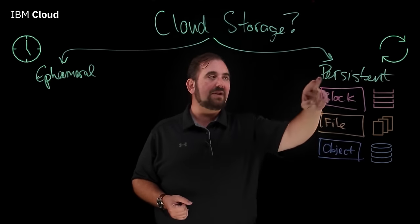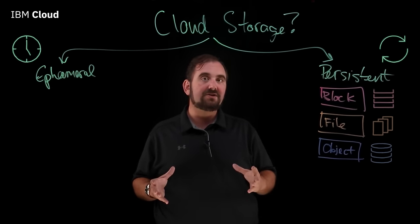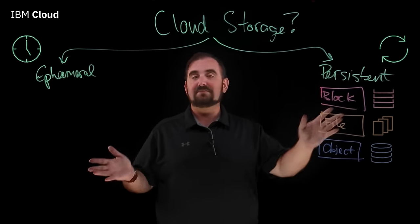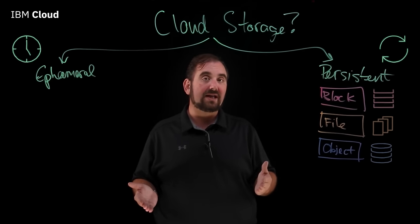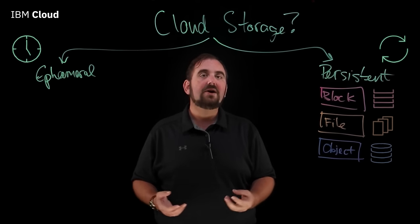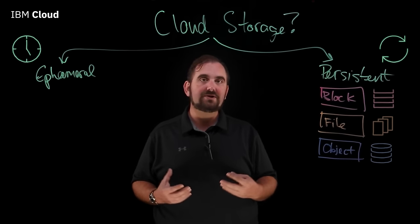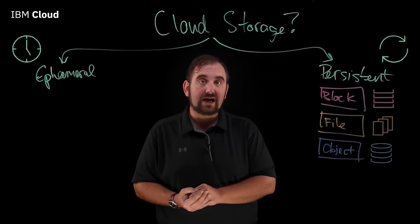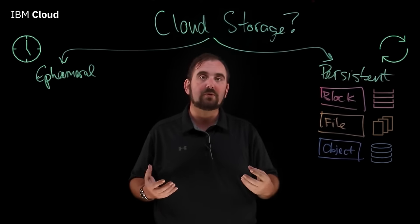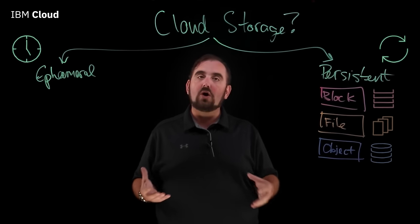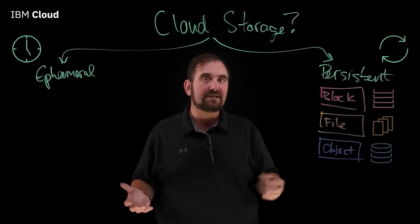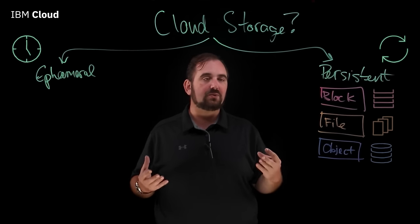In the world of cloud, this storage gets billed in two ways: how much of it you use, and how much performance you need. For usage, you get billed a set number of cents per gigabyte per month — this is true for block, file, and object. In addition, you also pay for performance. The higher the IOPS you need, or the more bandwidth you need for writing to and from storage, the more performance you require and the more expensive the storage costs. You're always looking for a balance between the performance needs of your application and the cost of running the actual infrastructure.